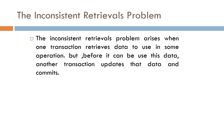The last concurrency control problem is the Inconsistent Retrieval Problem. This arises when one transaction retrieves data to use in an operation, but before it can complete, another transaction updates that data and commits.